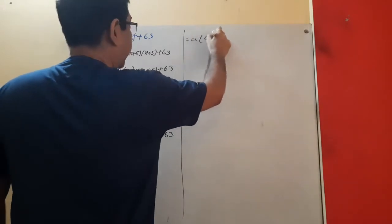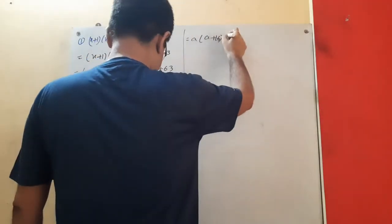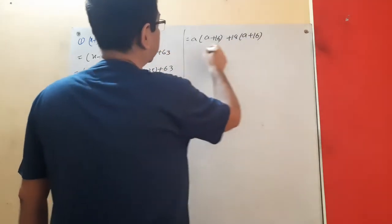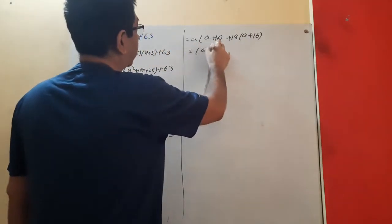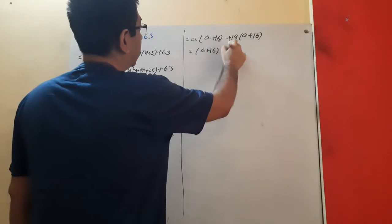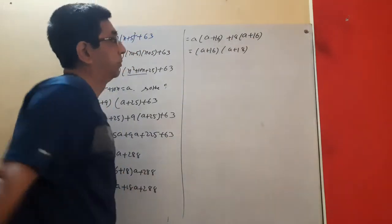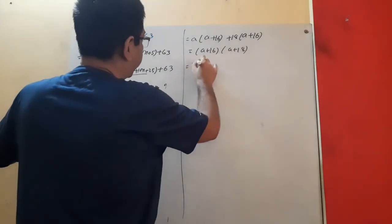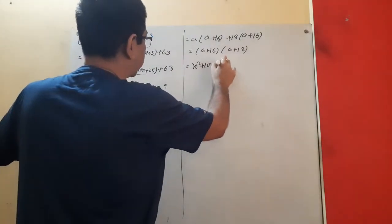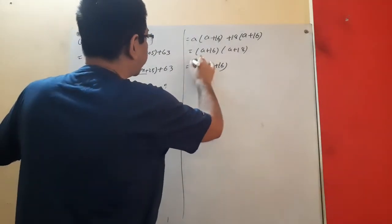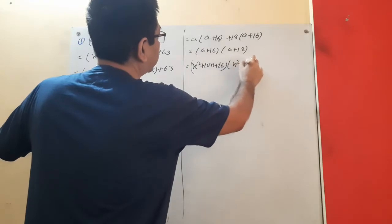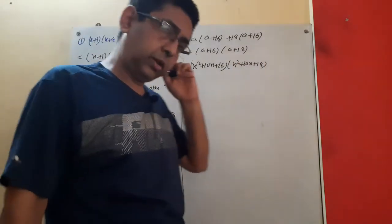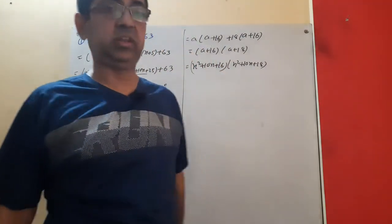Factoring by grouping gives a(a + 16) + 18(a + 16) = (a + 16)(a + 18). Now substituting back the value of a: (x² + 10x + 16)(x² + 10x + 18). But that is not the final answer yet.